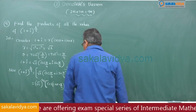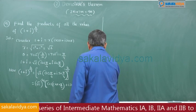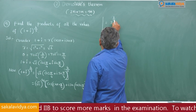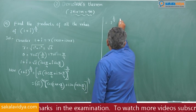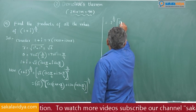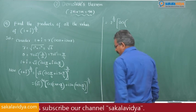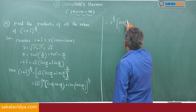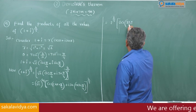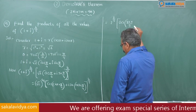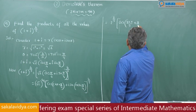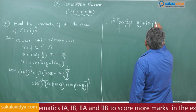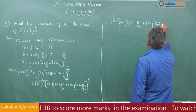This is equal to 2 to the power of 2 by 5, into cos(4/5 into (2kπ + π/4)) plus i sin(4/5 into (2kπ + π/4)), which simplifies to cos(8kπ/5 + π/5) plus i sin(8kπ/5 + π/5).